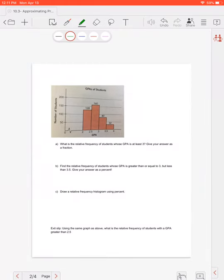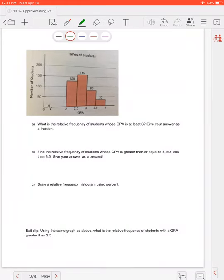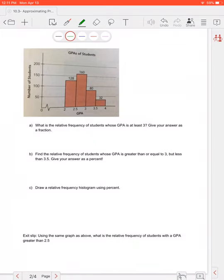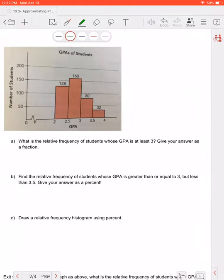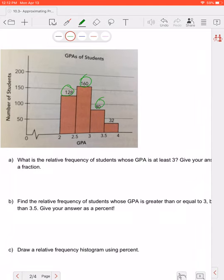If we go to the next question here, so this is a histogram. It says what is the relative frequency of students whose GPA is at least 3? Give your answer as a fraction. Now I know eventually I'm going to need the total number of students here. So what I'm going to do is I'm going to add up my 4 numbers here. So 128 plus 160 plus 80 plus 32, so that gives me a total of 400 students. And if we look at this graph just a little bit here, we can see this is their GPA. So in high school you've got to worry about your GPA. And this is how many students have that GPA.